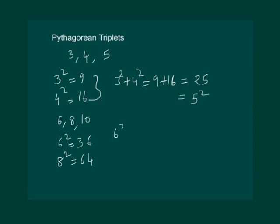Then 6 square plus 8 square would be 36 plus 64 which is equal to 100, and which is also equal to 10 square. And this means that sum of the square of 2 digits is equal to the square of the 3rd digit. Hence 6, 8 and 10 are another triplet called Pythagorean triplets.